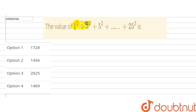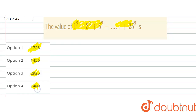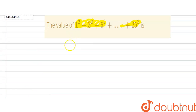In this question, we have to find the value of 1² + 3² + 5² up to 25². The options are 1728, 1456, 2925, and 1469. Let's start solving this question.